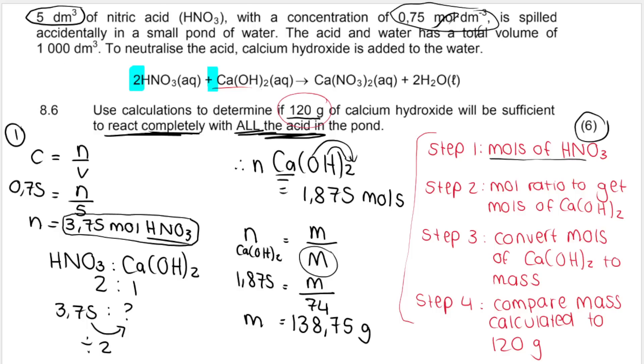But remember what the question said in the beginning? I have 120 grams. So 120 is less than 138.75. Therefore, 120 grams is not enough. Not enough or insufficient. So we did step one. We did step two. Mole ratio. Converted it back to mass. And then we have to compare for our final marks. You have to write a conclusion.